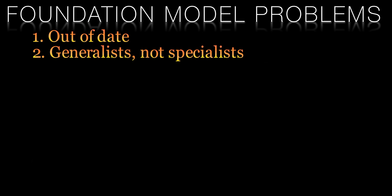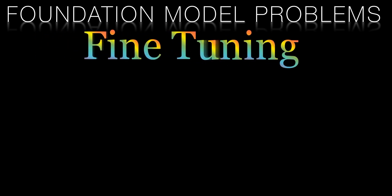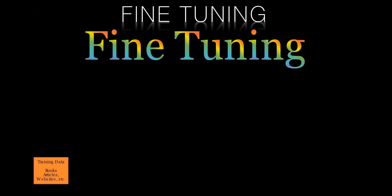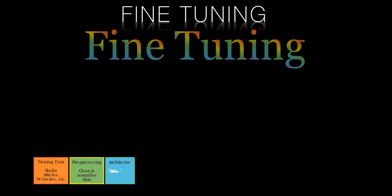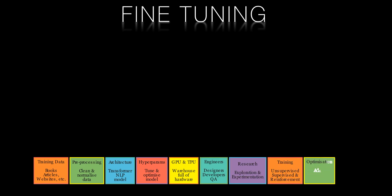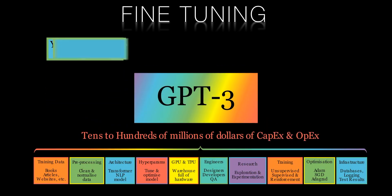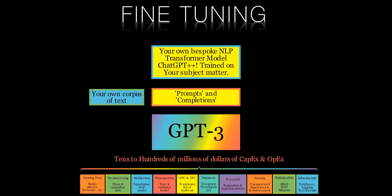Fortunately, these two problems — being out of date and not having subject matter expertise — have a common solution. That solution is fine-tuning. Fine-tuning is a process that enables users to modify existing pre-trained AI models to meet their specific needs. In this process, the user provides the model with a smaller data set that is specific to their use case, and the model is then fine-tuned to better perform tasks related to that data set.